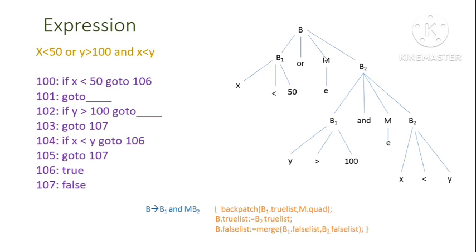We will derive this expression using a parse tree, starting with root node B. B → B1 OR M B2, where B1 is x < 50. B2 is the cumulative expression y > 100 AND x < y, abbreviated as B1 AND M B2 in the subtree, where B1 is y > 100 and B2 is x < y. Now we fill the true list and false list for each expression. For x < 50: B1 true list = {100}, B1 false list = {101}.